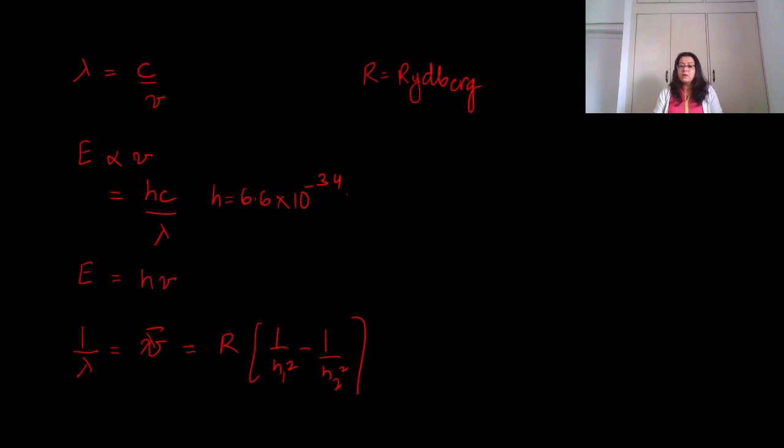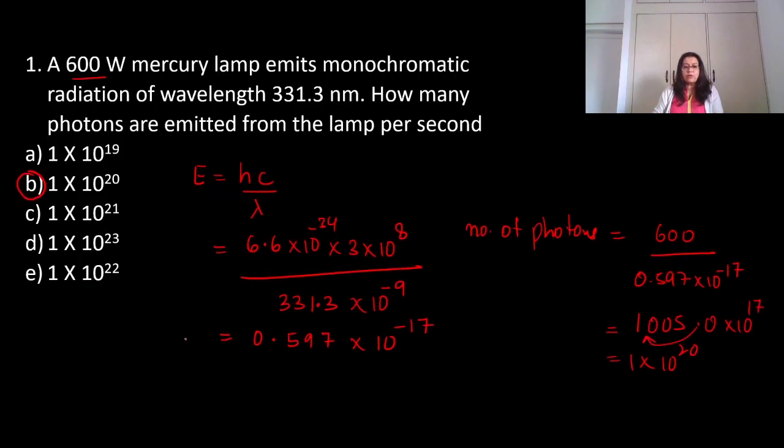You can calculate the value of lambda from transitions: 1 upon lambda, that is wave number, equals R into 1 upon n1 square minus 1 upon n2 square, where R is the Rydberg constant, which equals 109,677. These are some formulas for Structure of Atom that I'm sure you know.